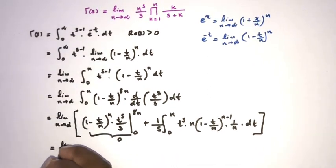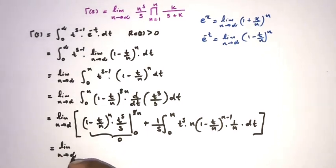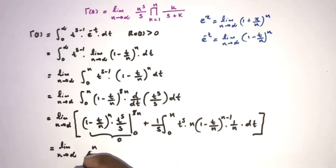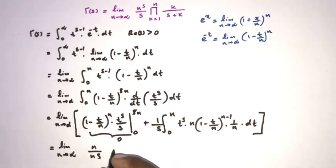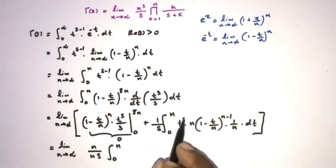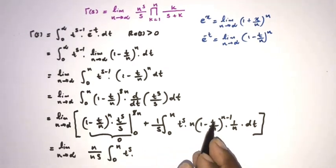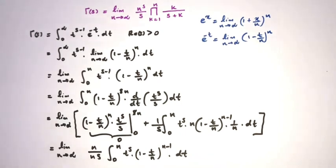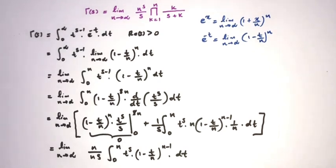After simplification, we have the limit as n approaches infinity of n/(n·s) times the integral from 0 to n of t^s times (1 - t/n)^(n-1) dt. We then apply IBP again to continue the reduction.